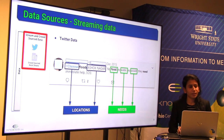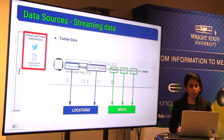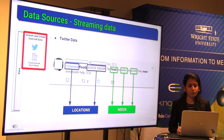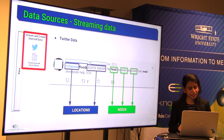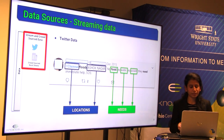The tweet comes with metadata like user profile information, name, location, tweet time, and external multimedia. As we said earlier, we want to know what has happened, where it has happened, and when. The 'when' can be answered with the tweet's timestamp. The need classification gives us the 'what,' and the location mentioned in the text gives us the 'where.'